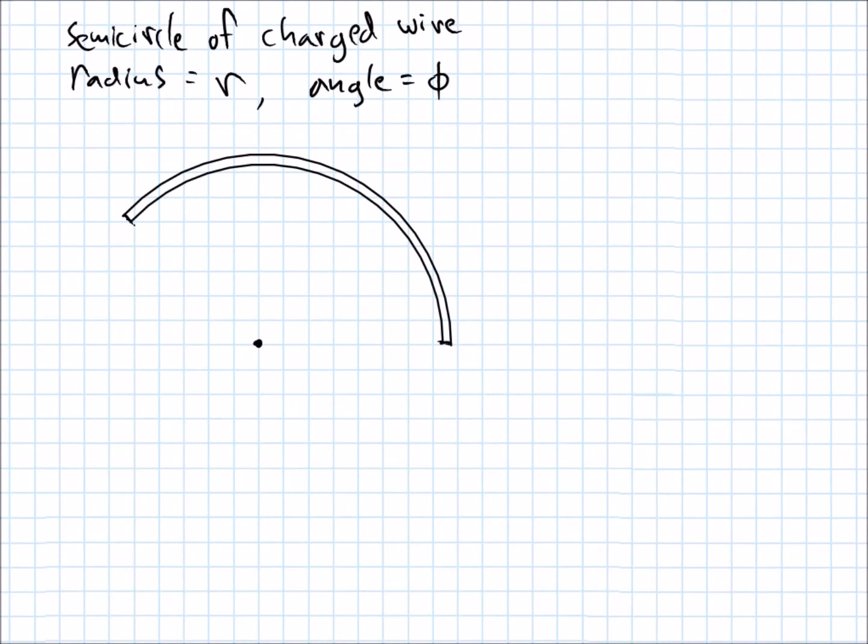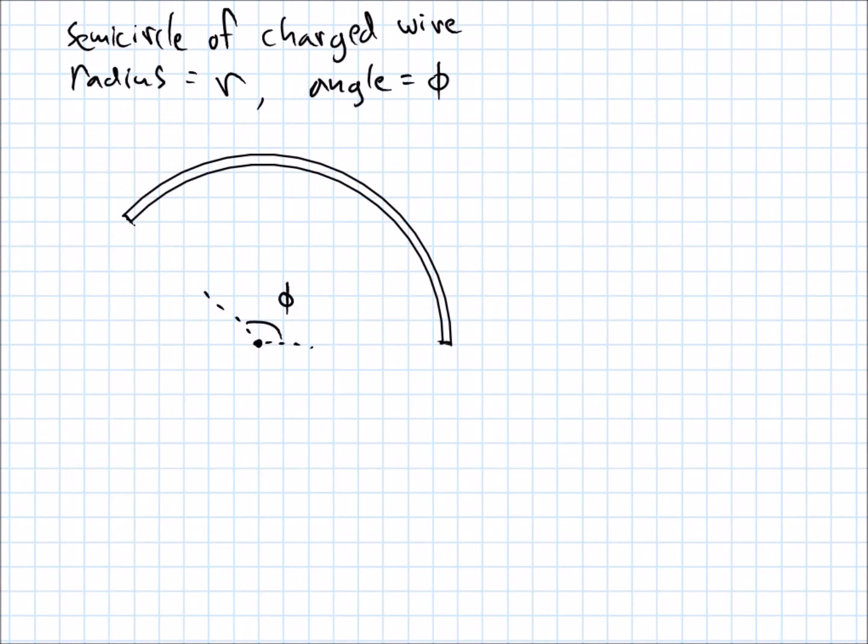Hello. All right, so I've got a wire that has some positive charge on it. Okay, I should probably write that down. And I've bent it into a semicircle, or something, whatever you call this,